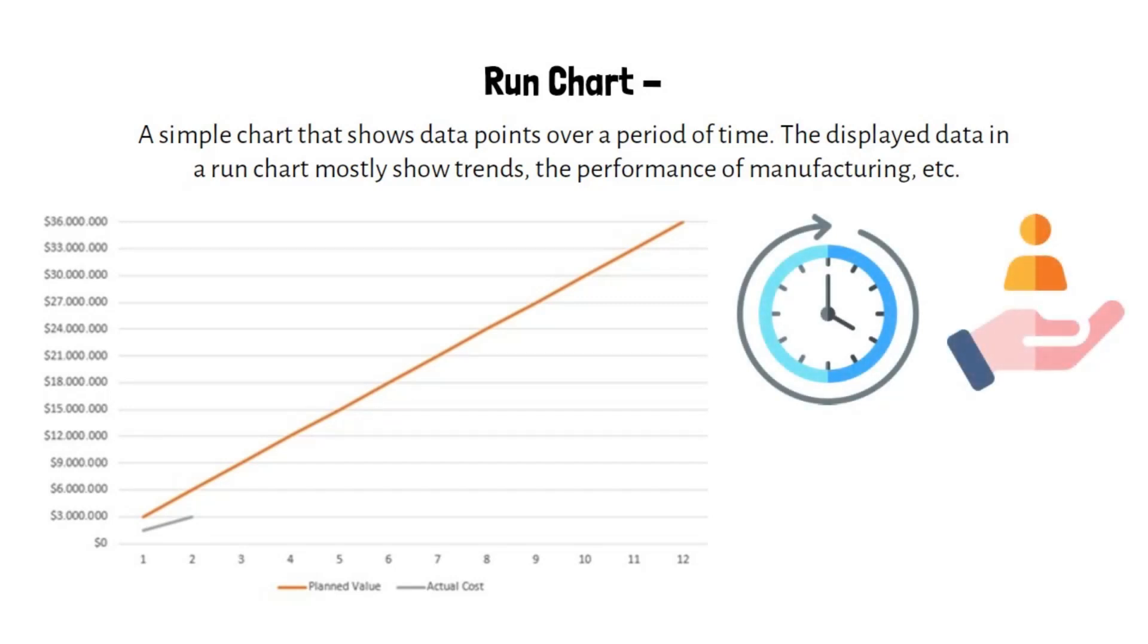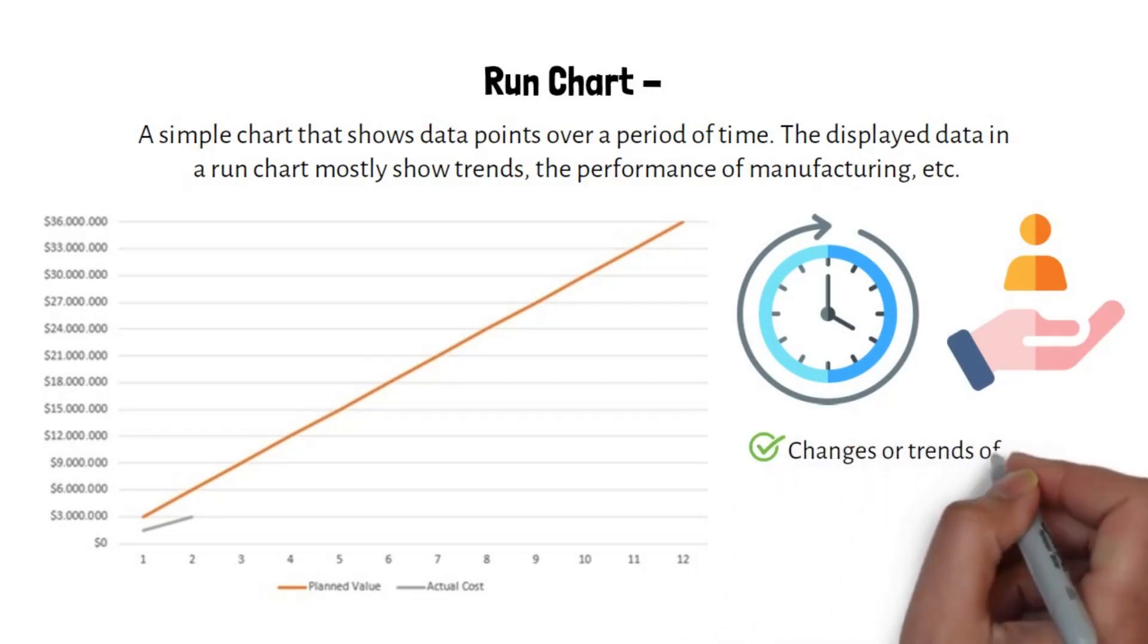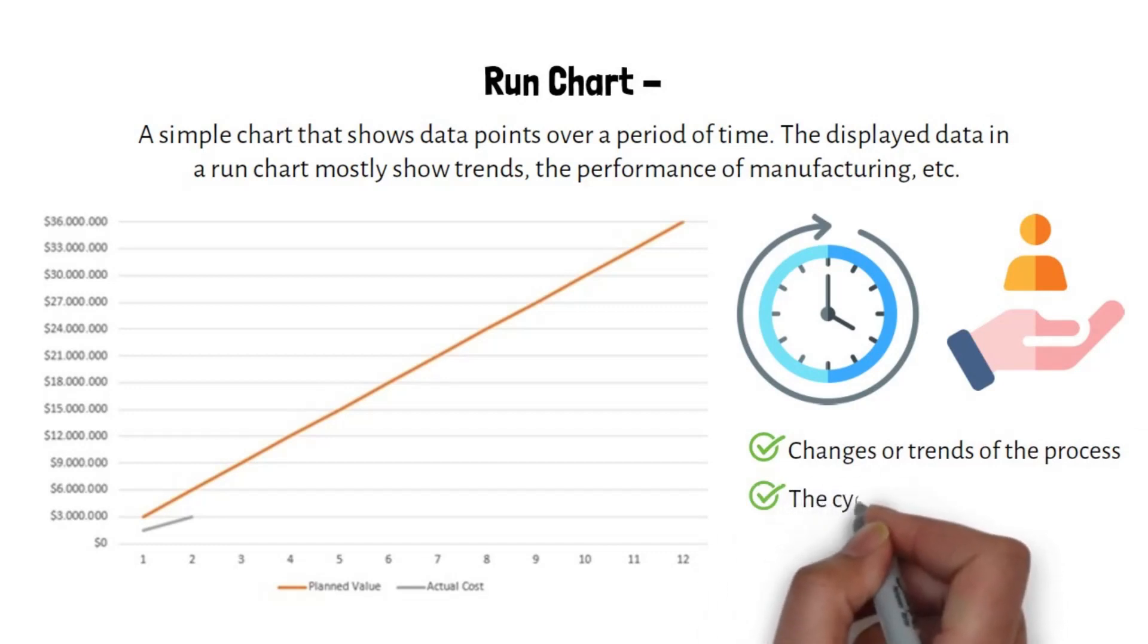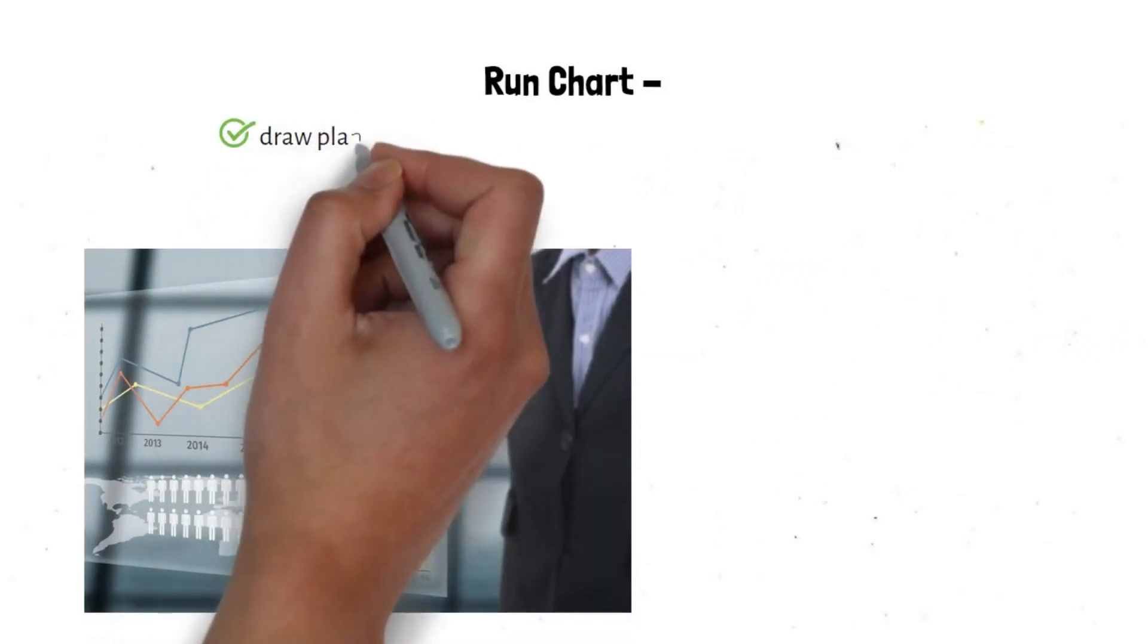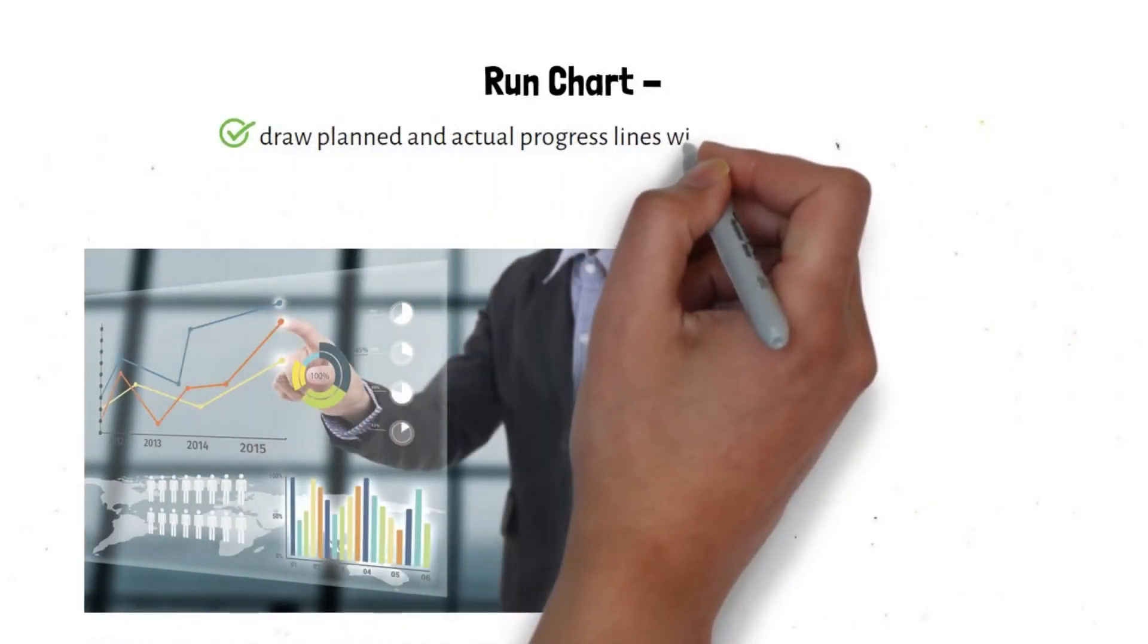A run chart helps you analyze the following over time: changes or trends of the process, the cycle of the process, and performance of a process.